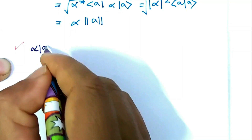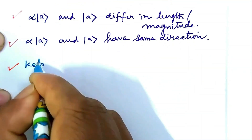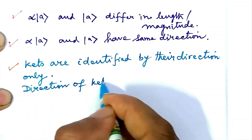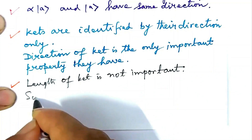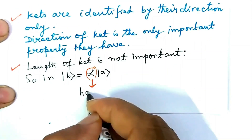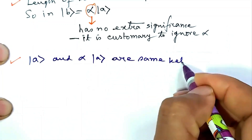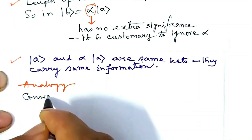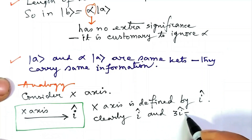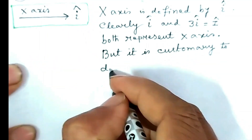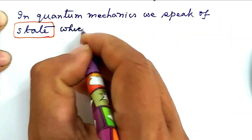We thus note that α·ket A and ket A differ in length or magnitude, but α·ket A and ket A have the same direction. Kets are identified by their direction only — in other words, direction of a ket is the only important property. Length of a ket is not important. So in the relation ket B = α·ket A, the α has no extra significance, and it is customary to ignore it. α·ket A and ket A are the same ket; they carry the same information. As an analogy, consider the x-axis: i-hat and 3·i-hat both represent the x-axis, but it is customary to deal with i-hat — this factor of three has no extra significance.